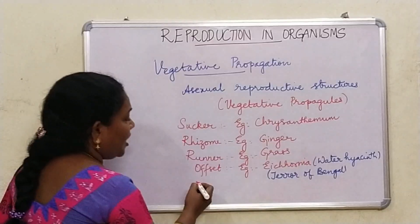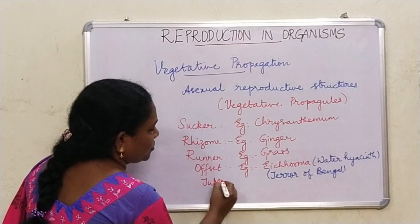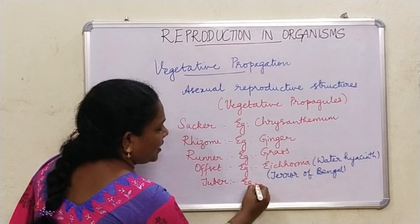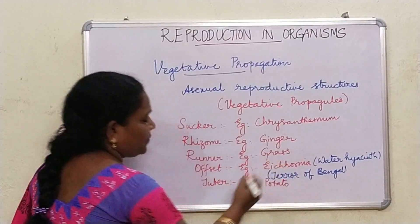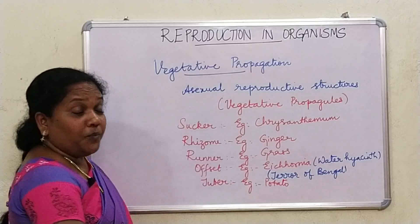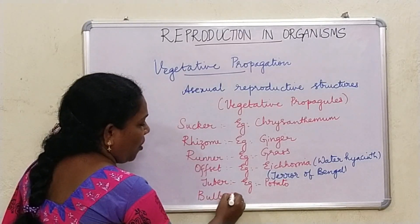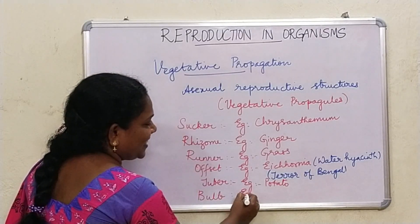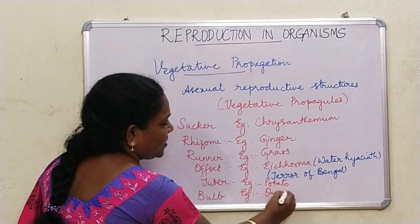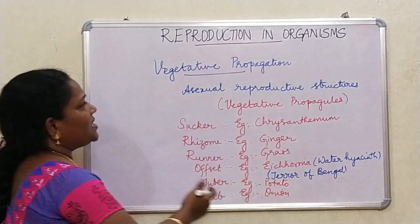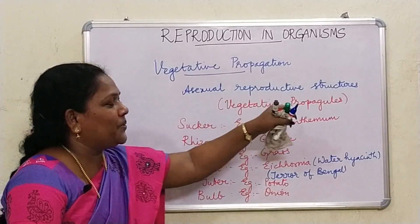Then there is the tuber — example: Potato. And the bulb — example: Onion. All these are called vegetative propagules.